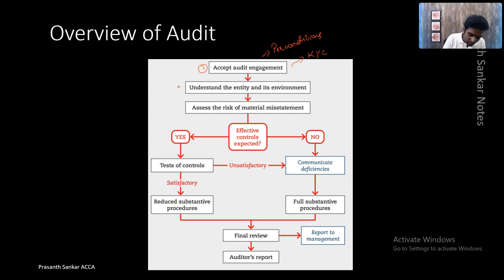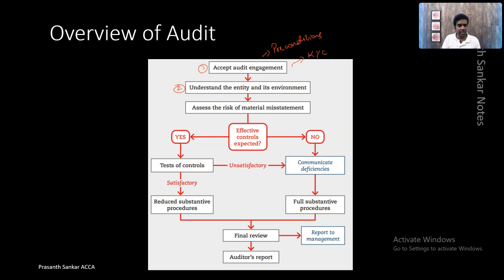Once the engagement is accepted and the auditor has entered into a contract, the second step is to understand the entity and its environment. He will understand the entity in detail — what they do, what their day-to-day practices look like, who their management and directors are, what their daily financial transactions are, what their internal controls are, and which ERP system they follow.